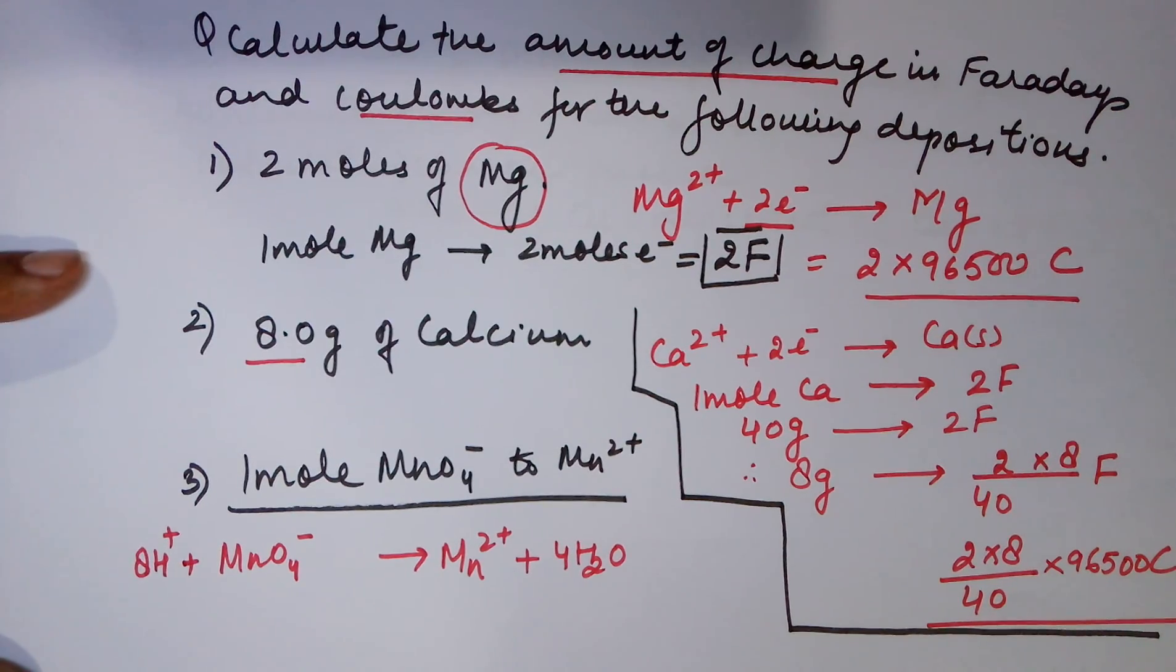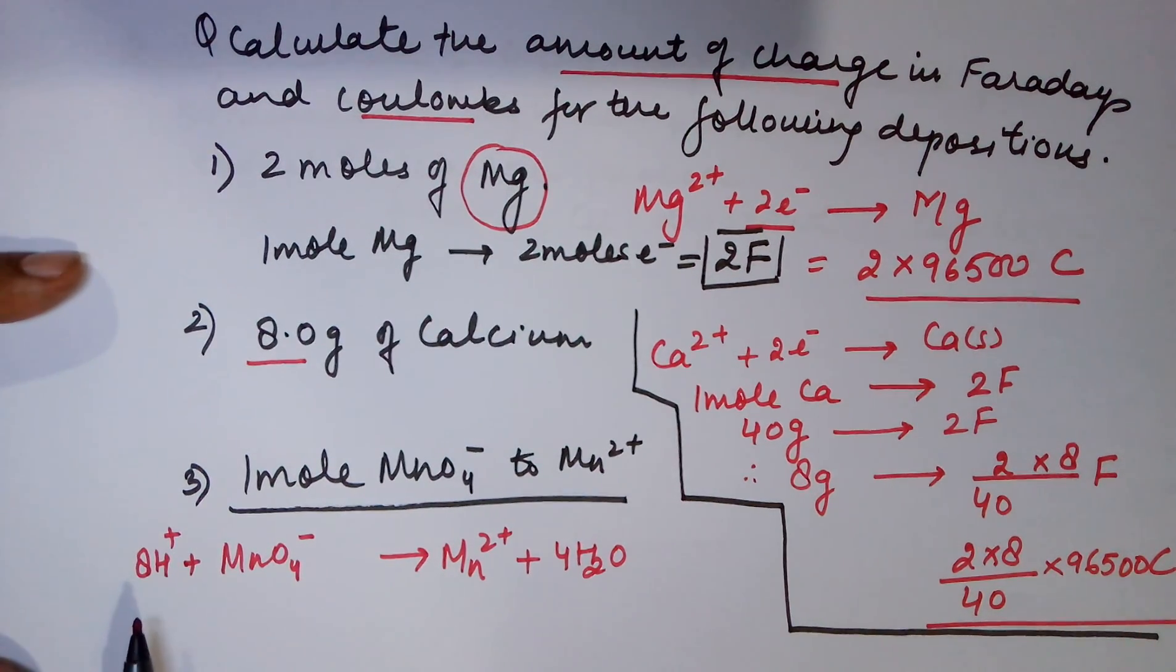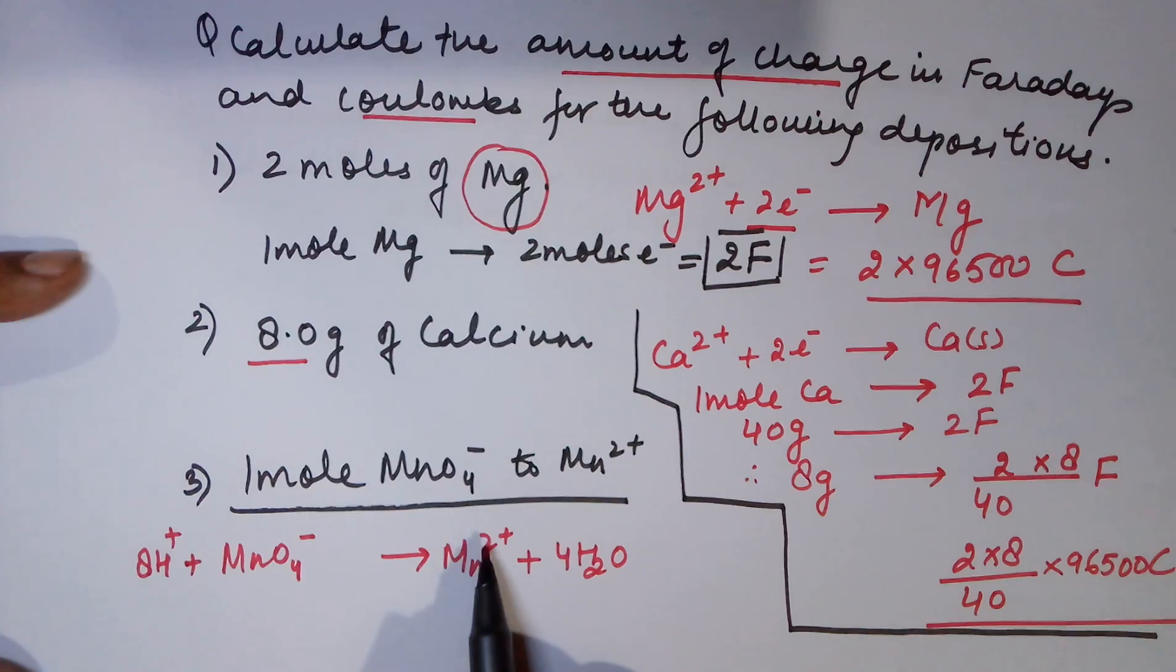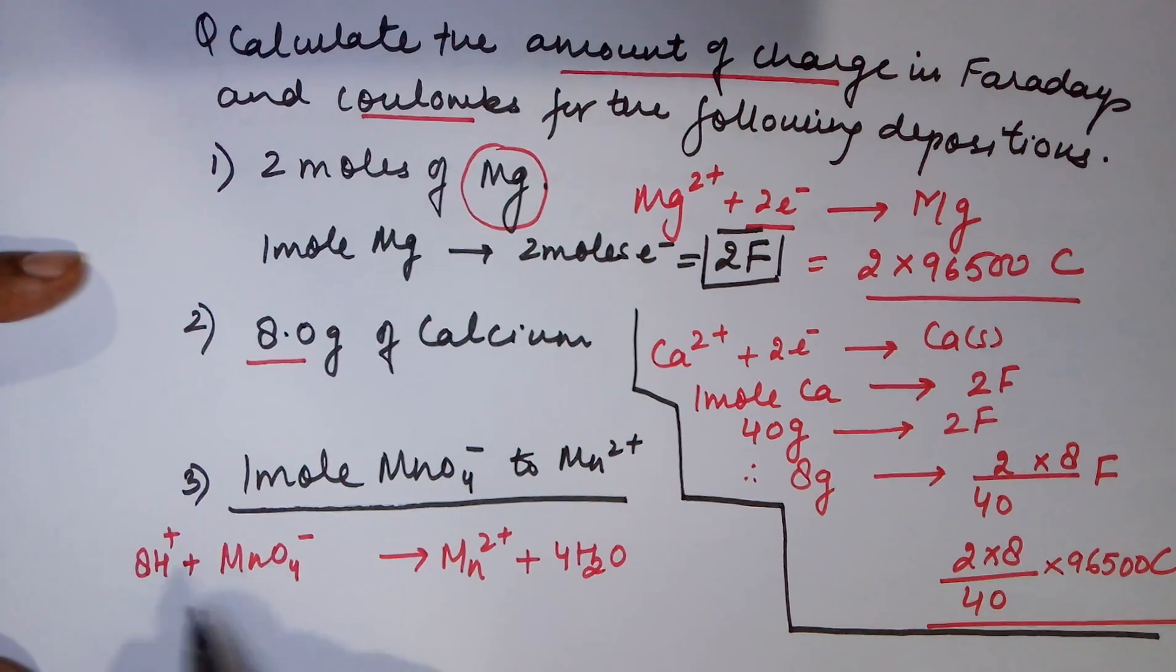Balancing with charge, you can see you got 8 plus and 1 minus which means a total of 7 plus on the left hand side, whereas you have only got a 2 plus on the right hand side. To balance it out, you would require to add electrons. 7 plus on this side, 2 plus on this side.